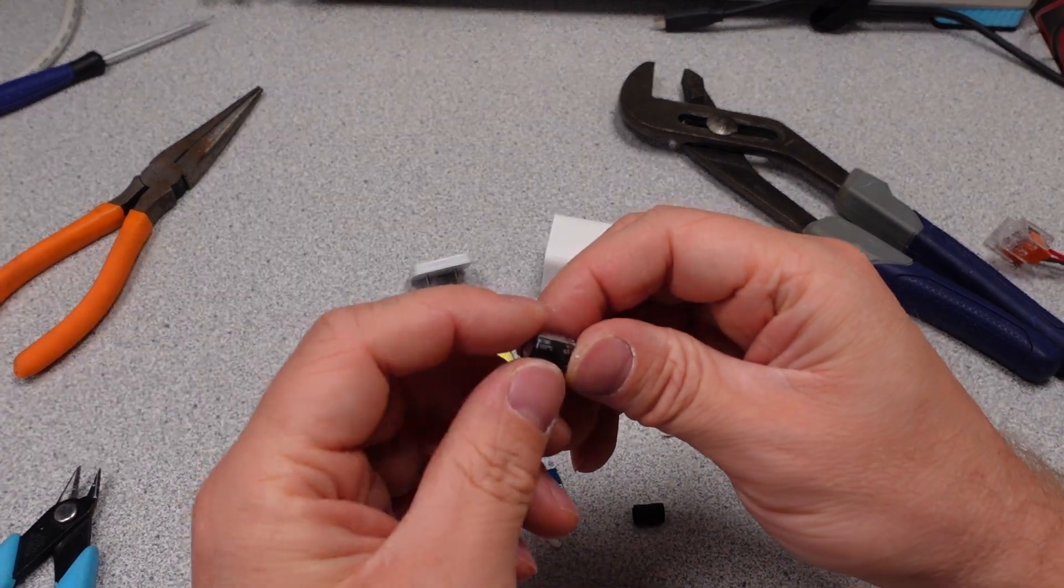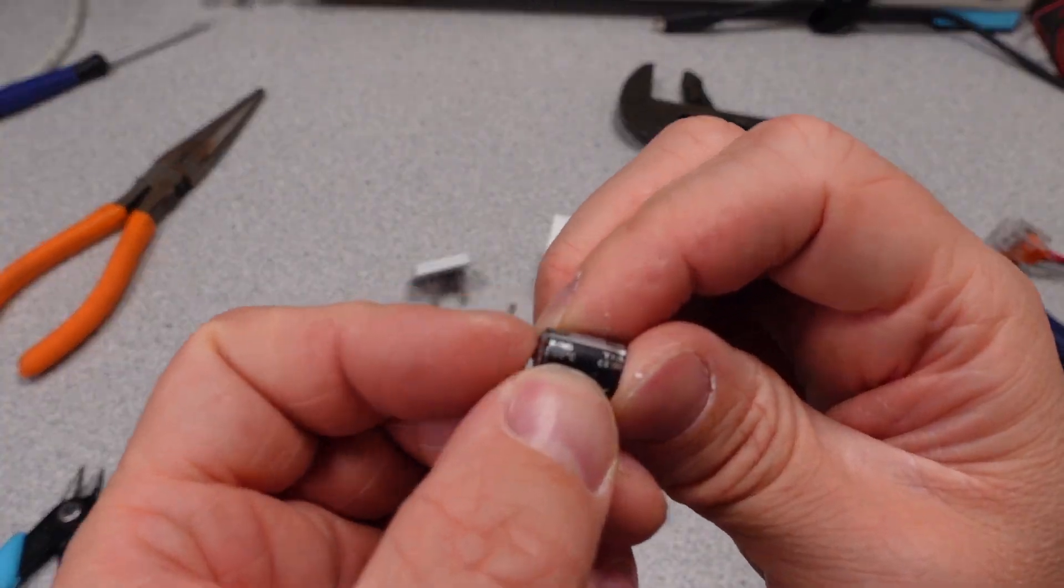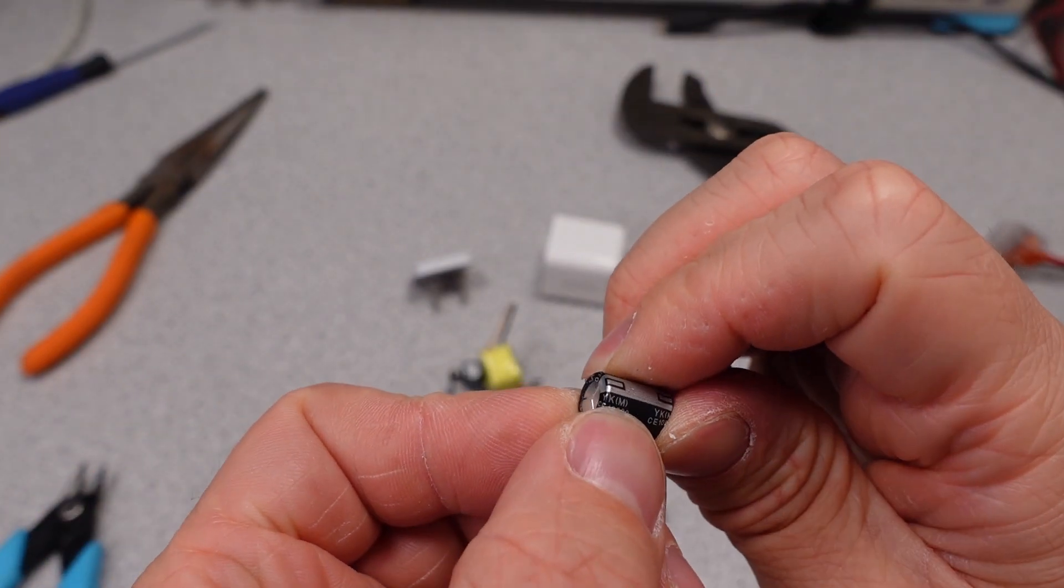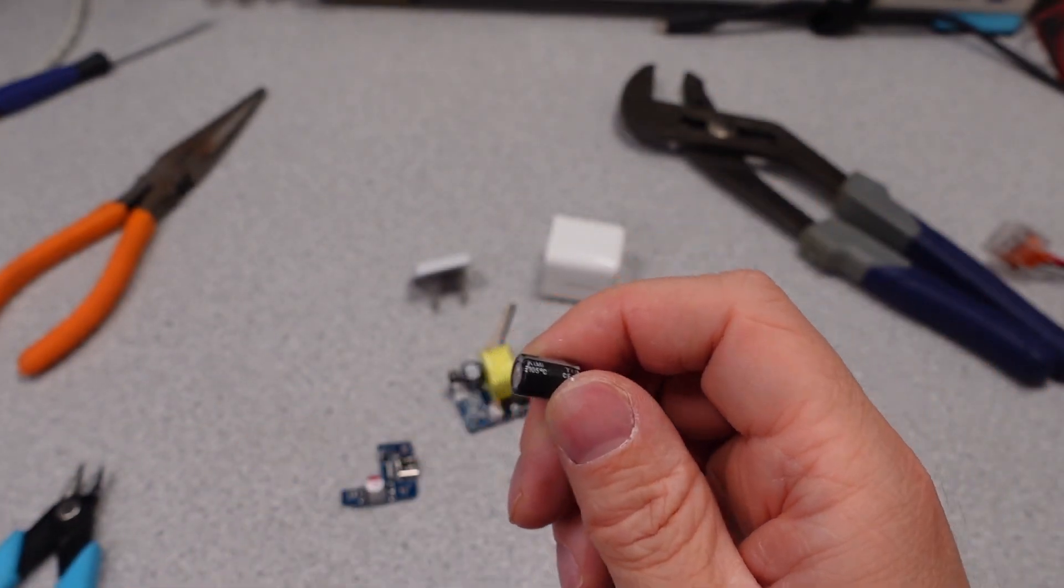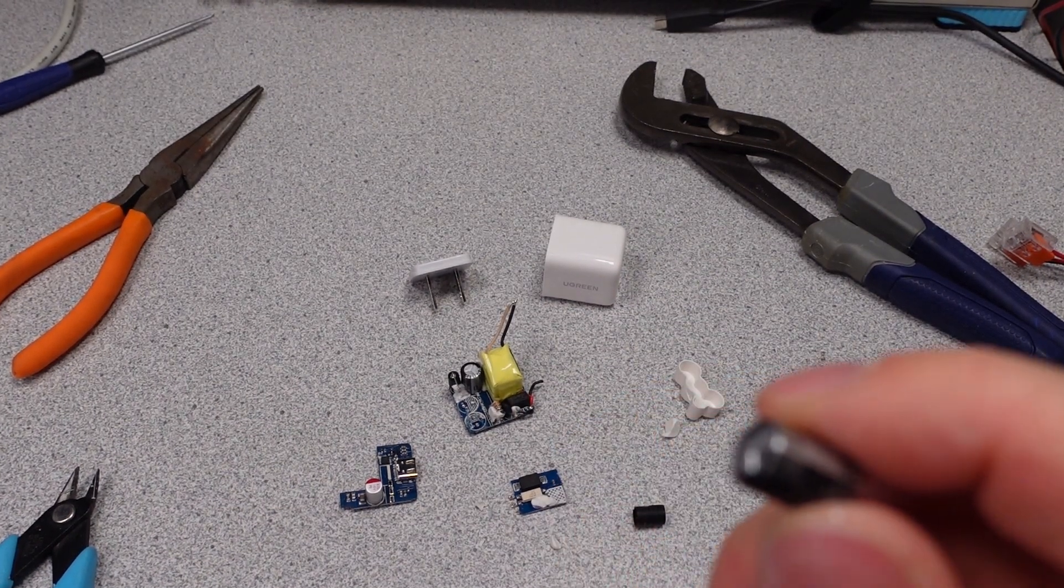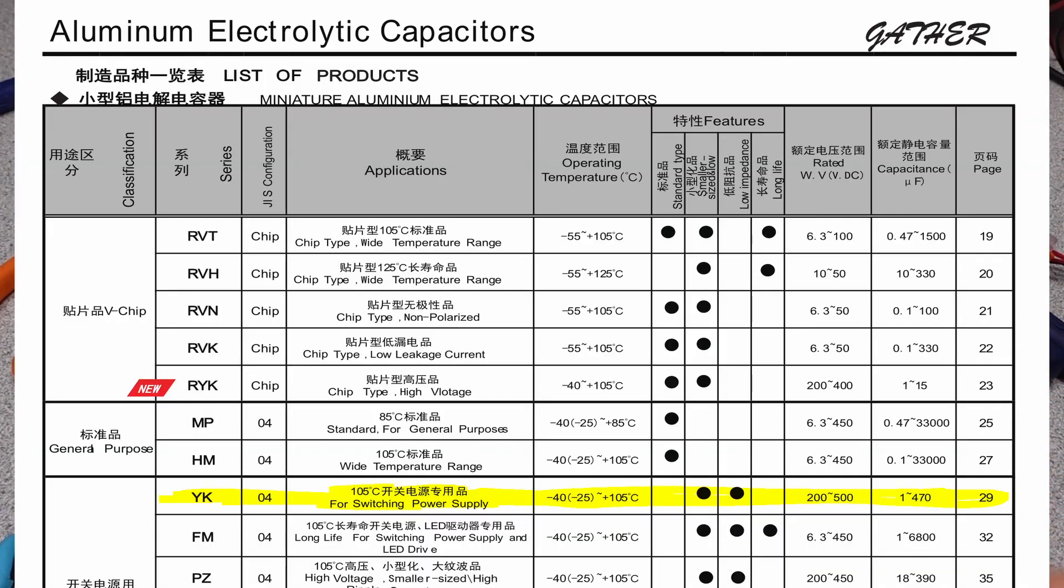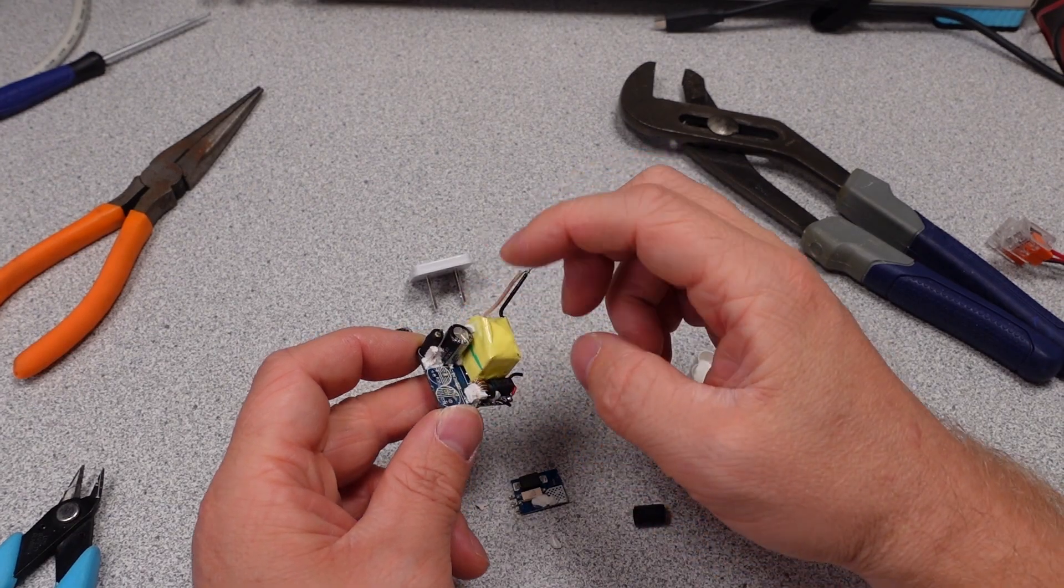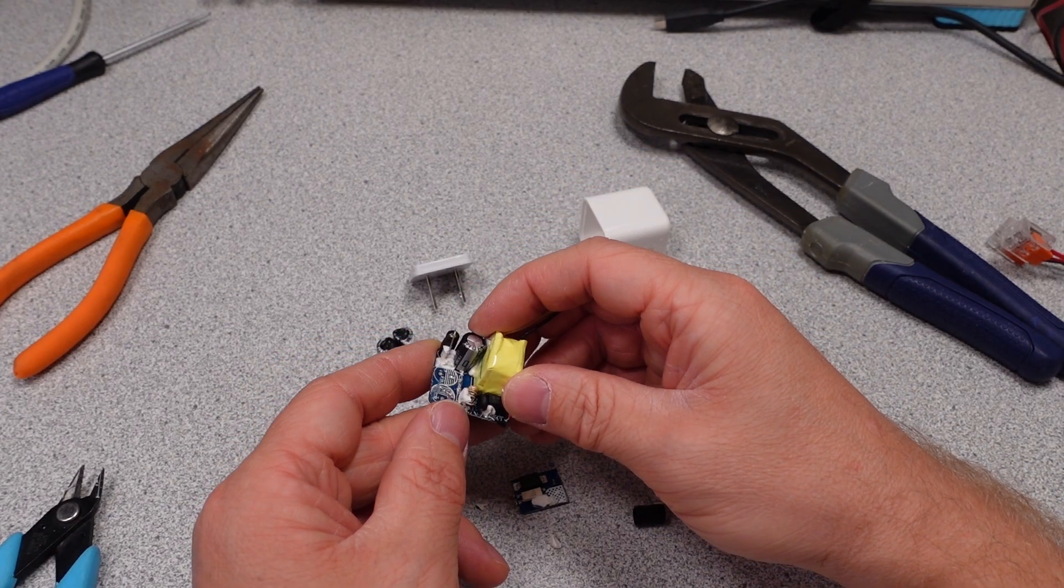These are capacitors. There we go. See 105 degrees C rated. So you can see this is the YKM series. So this is specifically for switching power supplies. Nothing wrong with that at all. They got the requisite capacitor in there for the job that's being done. 105 degrees C rated.